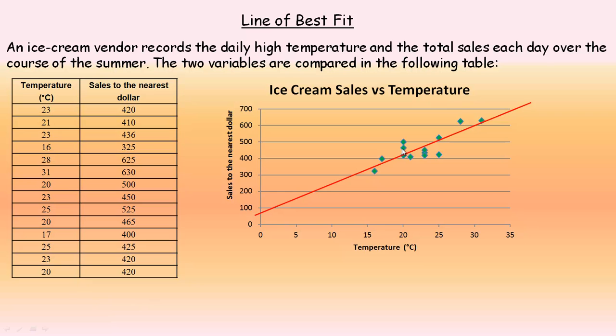The points should be as close as possible. If we count here, there are about six above and one two three four five six below. So that's a pretty good line of best fit.